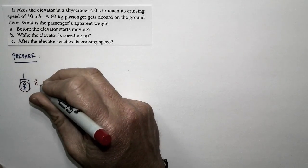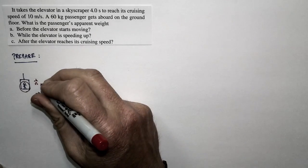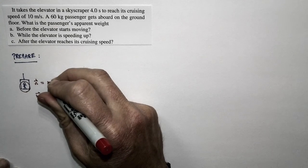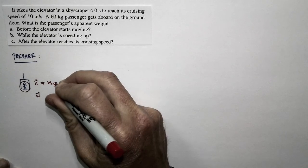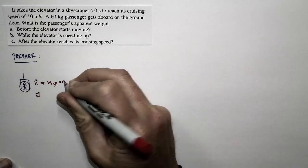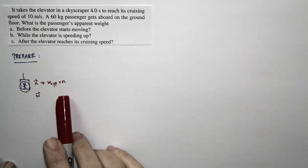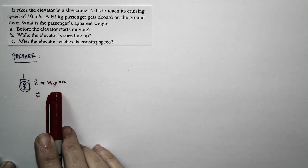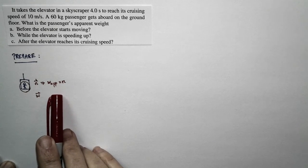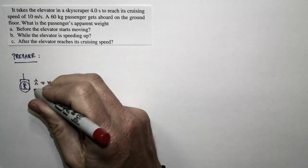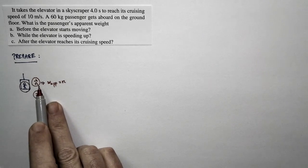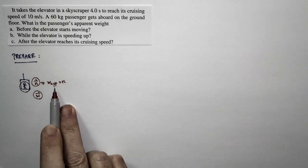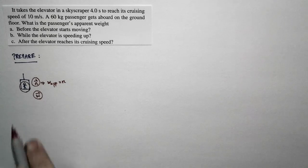Remember this: the weight force is with you always, but what you perceive as weight — your apparent weight — is just equal to the contact forces that support you. In this case, that's just equal to the normal force. So if we solve for the normal force, that tells us what the apparent weight of the passenger is, because what the passenger actually perceives is the force of the floor pushing on him or her.